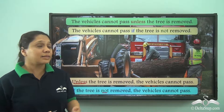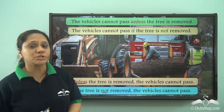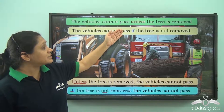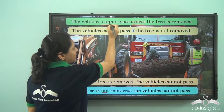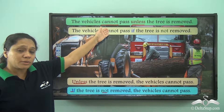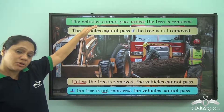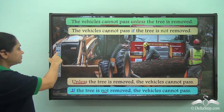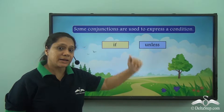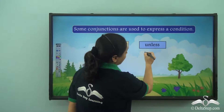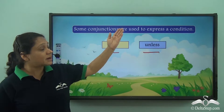We have seen that 'unless' and 'if not' can be used interchangeably most of the time. 'Unless' is used when there is a negative statement — 'cannot' makes it a negative statement, as in 'the vehicles cannot pass.' So 'unless' is mostly used with a negative statement. Some conjunctions are used to express a condition, and 'if' and 'unless' are two such conjunctions.